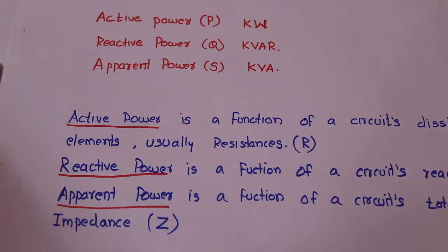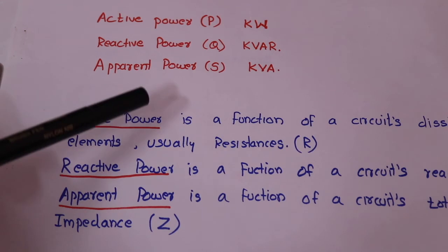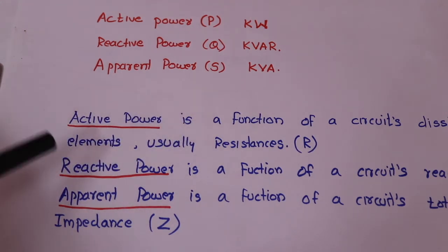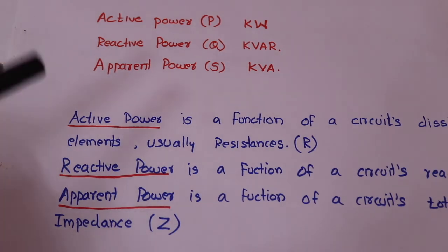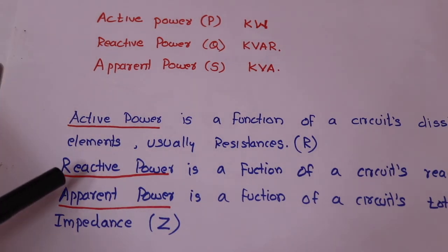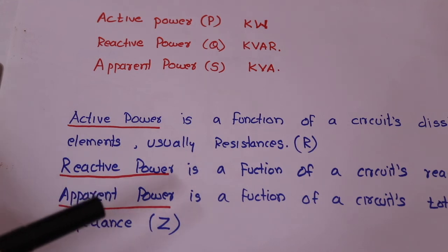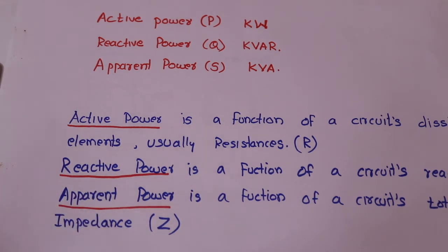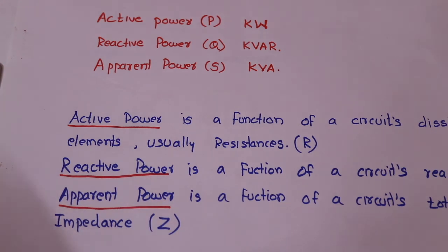This defines reactive power. If we have a reactive element, we have reactive power. Active power is a function of the circuit's dissipative elements — useful elements — specifically resistance. Reactive power is a function of the circuit's reactance: capacitors and inductors. We have reactive power that is positive and alternating.